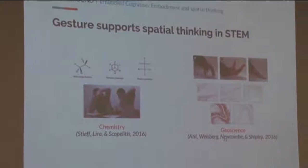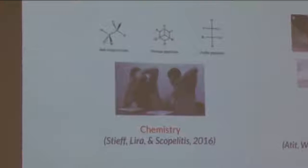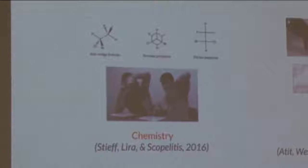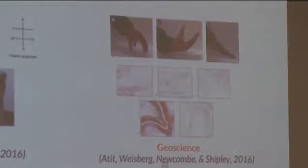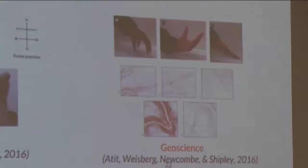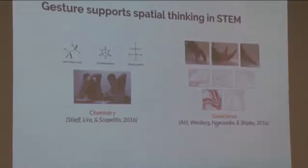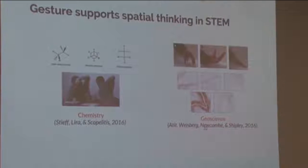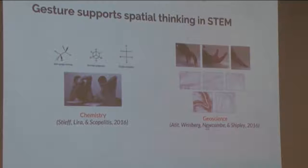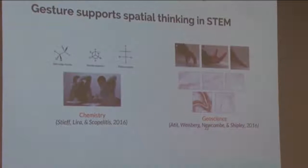Researchers have begun to focus on the role that embodied actions like gesture play in learning. Some of the earliest research focused on conceptual understanding of things like number and arithmetic operations in elementary math. But a growing number of studies have looked at the role that gesture plays in promoting spatial thinking in areas like geometric proofs, statistics, chemistry, and geoscience. I want to highlight two studies because in both cases the authors found that embodied actions — specifically gestures — had a positive impact on spatial thinking, though their findings were qualified in a few important ways.